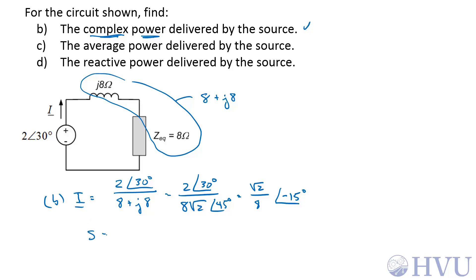The complex power S is just the voltage phasor times the complex conjugate of the current phasor over 2, which is 2 at an angle of 30 degrees, times the complex conjugate of this is square root of 2 over 8 at an angle of plus 15 degrees. Conjugation changes the sign on the angle over 2, that 2 cancels with that 2, this becomes square root of 2 over 8 at an angle of 45 degrees, which is my answer for part B.